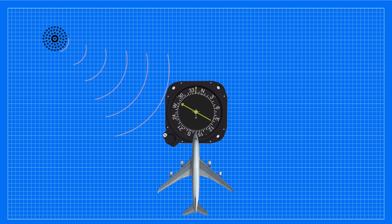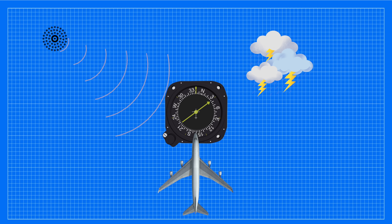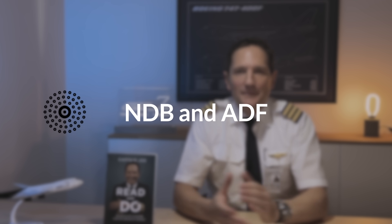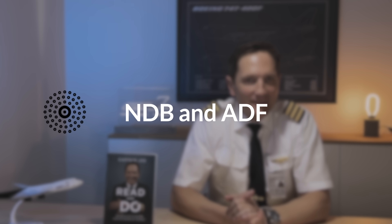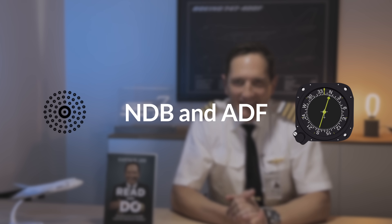Storms can pull the ADF needle toward them instead of the NDB, leading to incorrect readings — so you are basically getting headed towards the thunderstorm. Dear friends and followers, welcome back to my channel. Today we are diving into something fundamental yet fascinating: the NDB and its partner, the ADF.